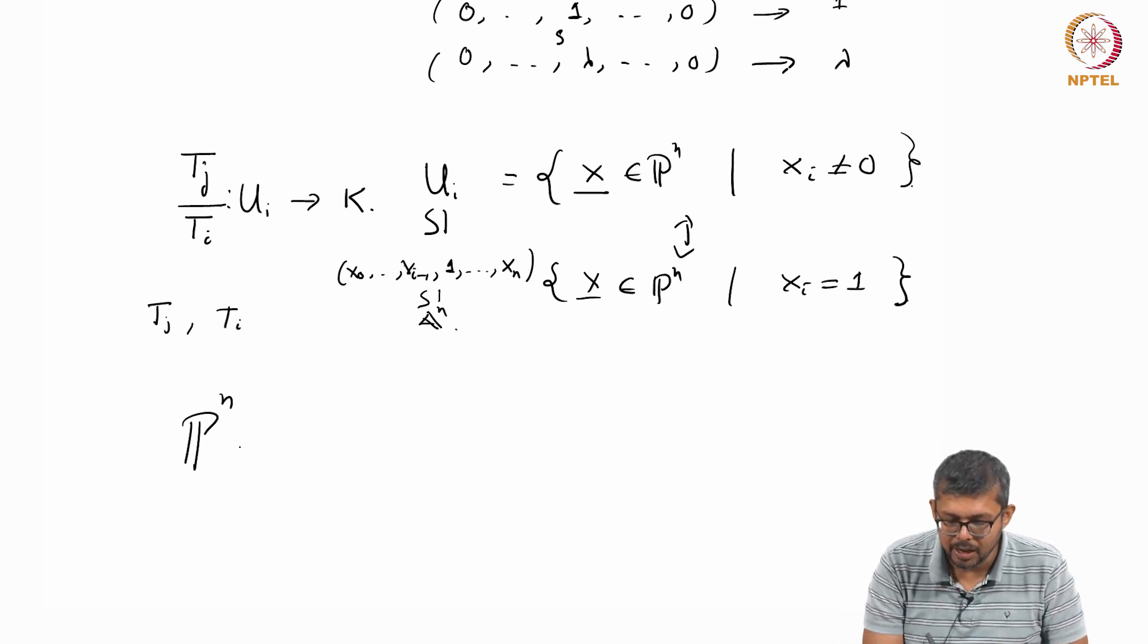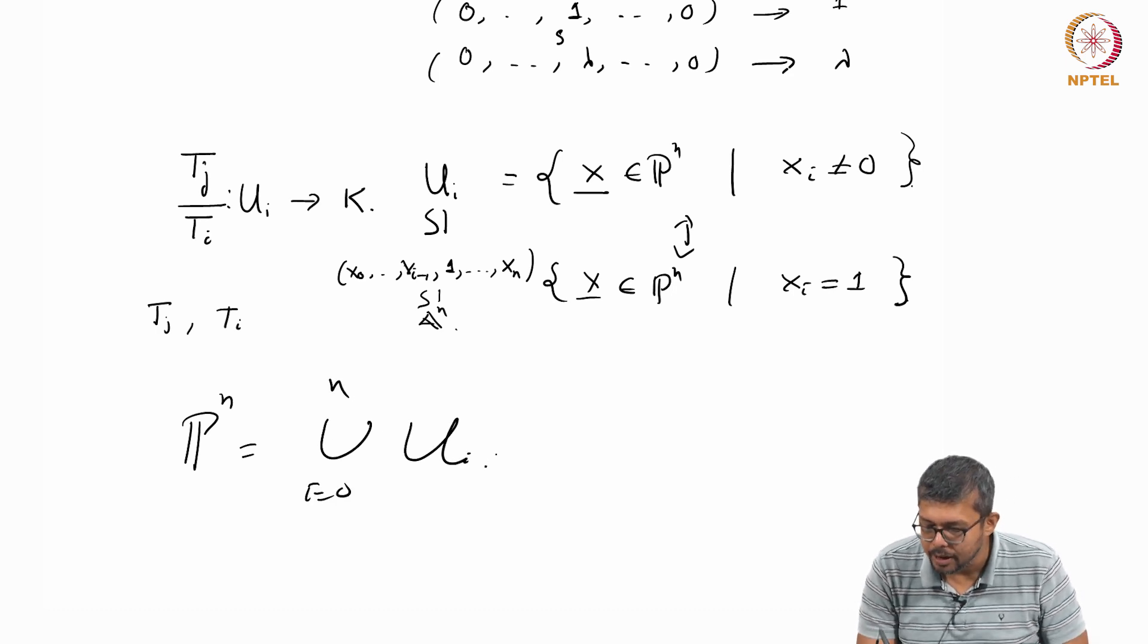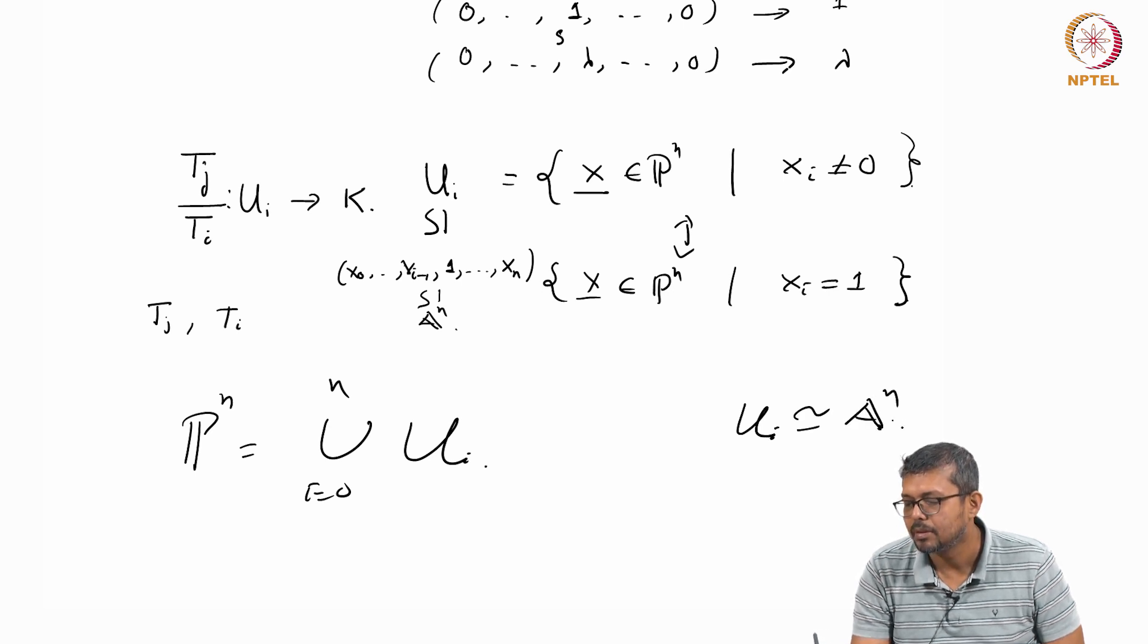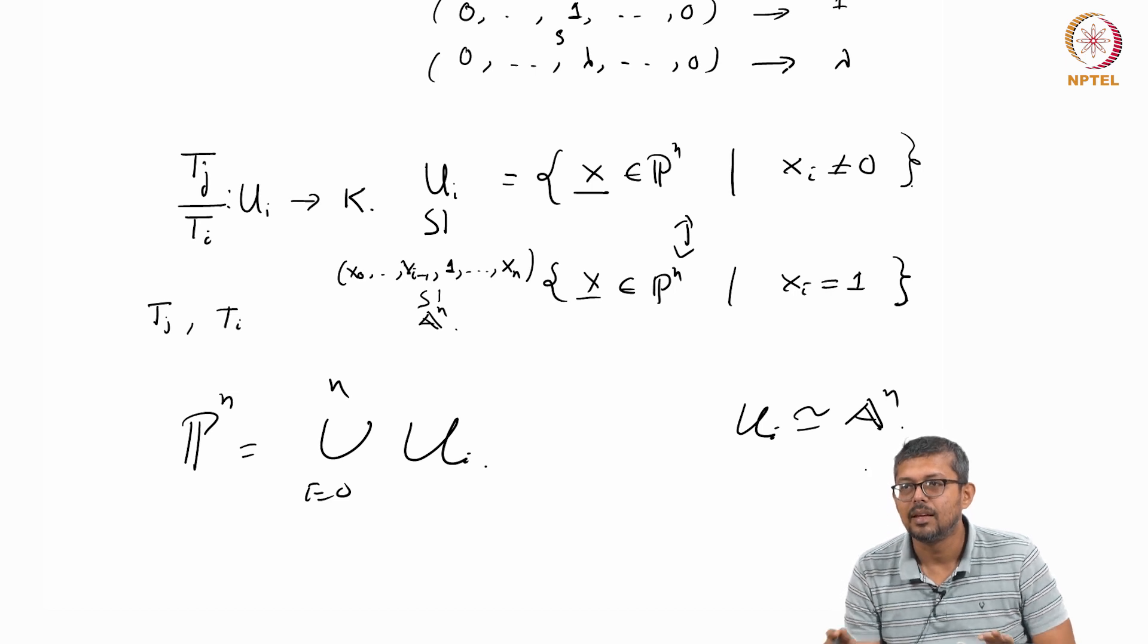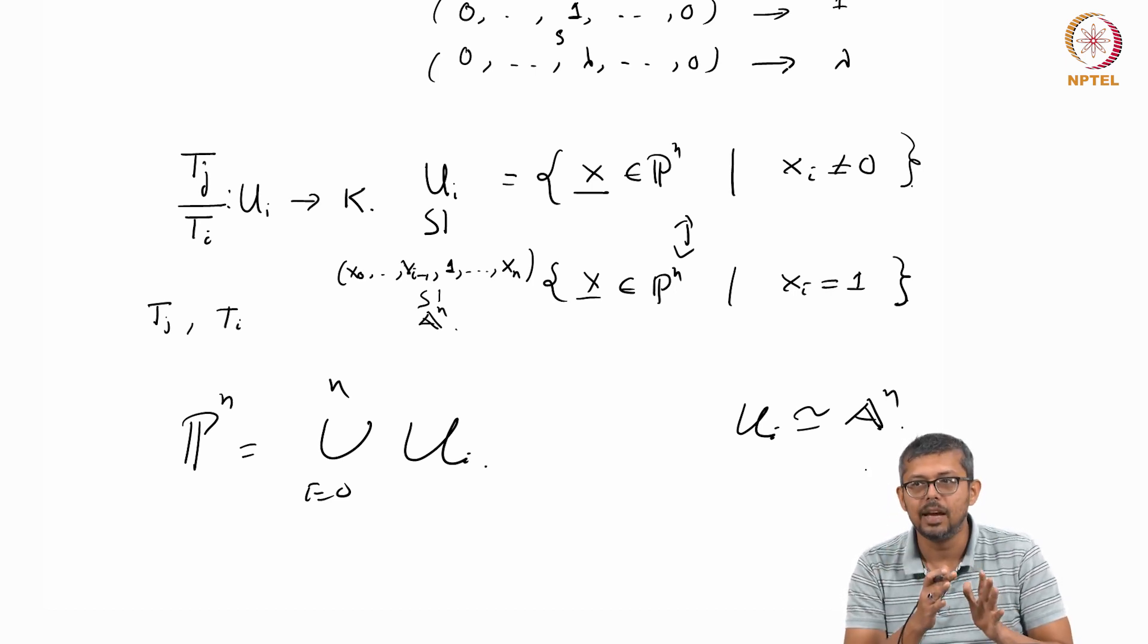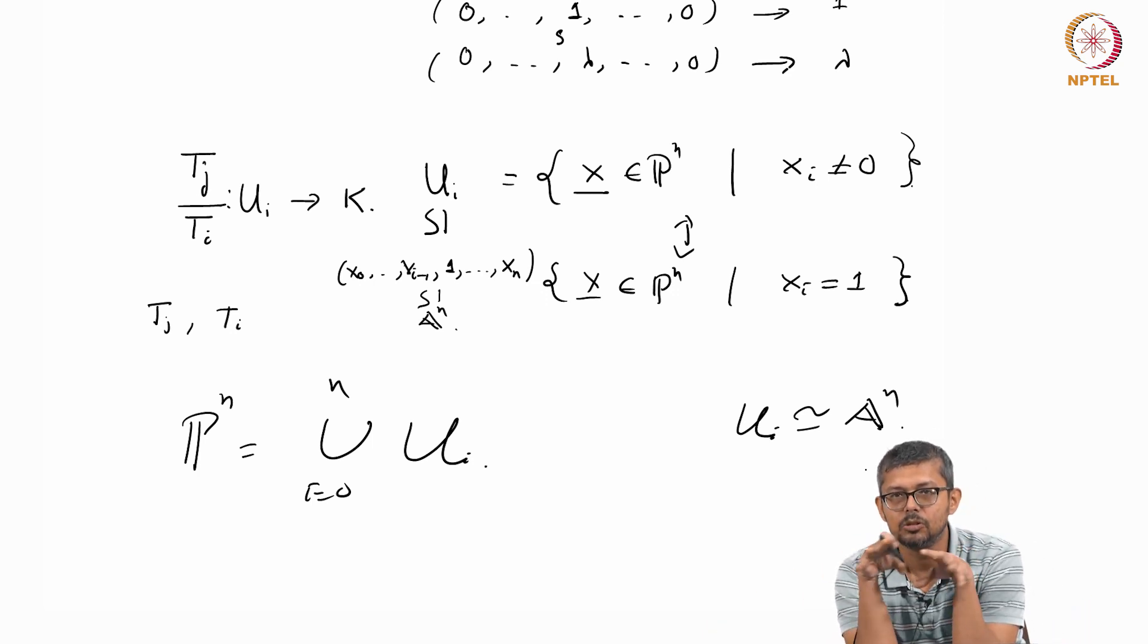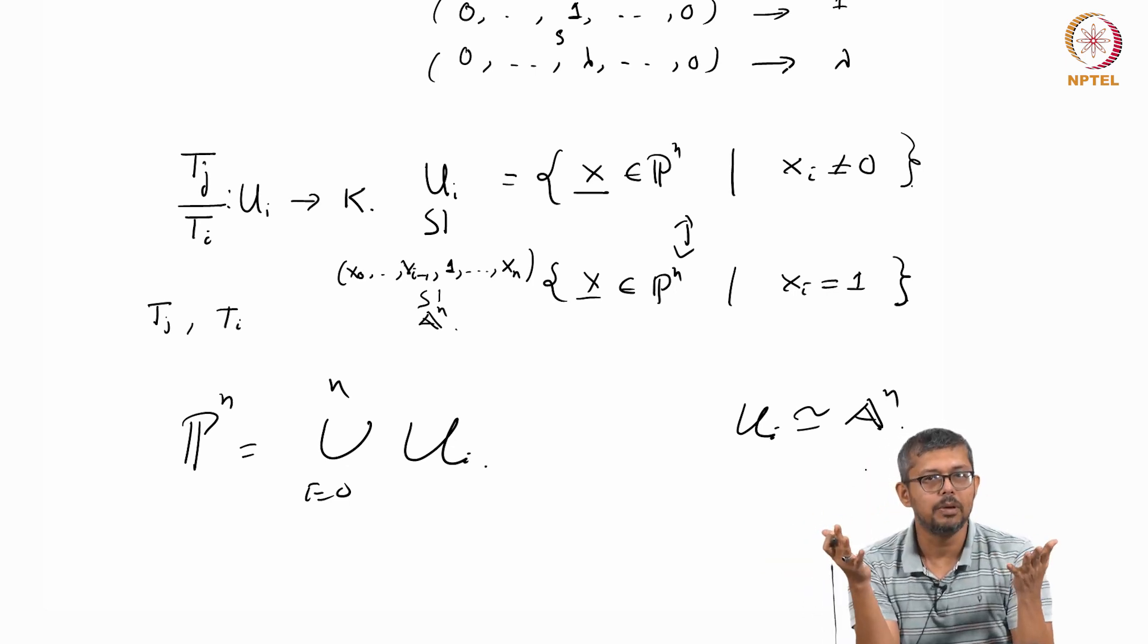So this P^n, you can write it as union of U_i, i equal to 0 to n, where each U_i is isomorphic to some copy of A^n. But there is identification. So these P^n's are not very far from affine. Locally they are all affine space. So it is gluing of affine space. But globally it is very different. You will see that there are no global function, there are no regular function on P^n other than constants.